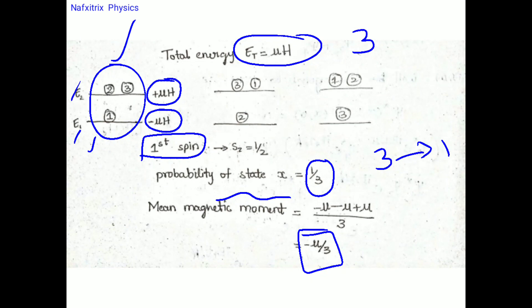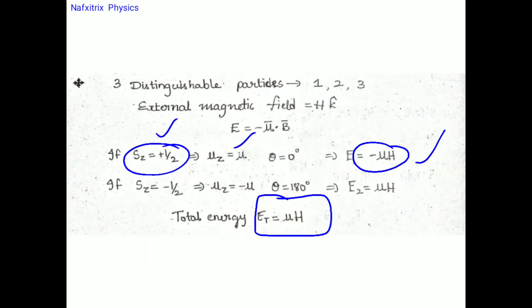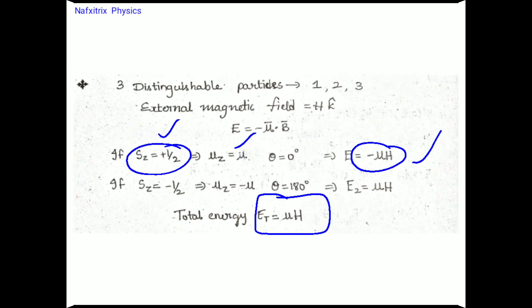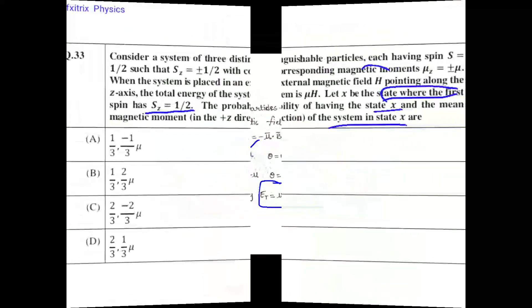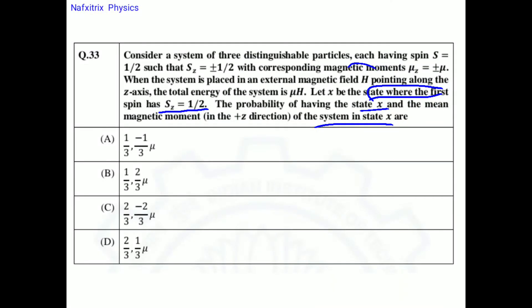So the final answers are: the probability of state x is 1/3, and the mean magnetic moment of the system in state x is −μ/3. Thank you.